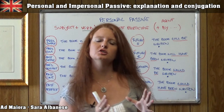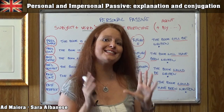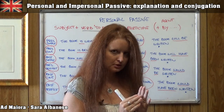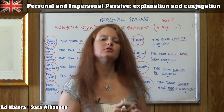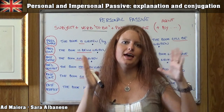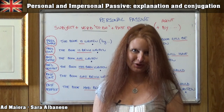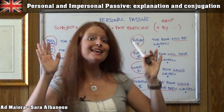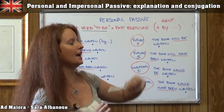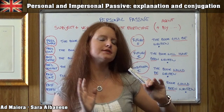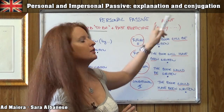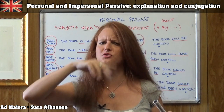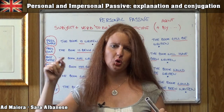We can remember that the past participle is formed by adding -ed if the verb is regular, but if it is irregular we have to check the third form — the third column on my table of irregular verbs. So: subject, verb 'to be,' past participle. If you want, you may add the agent, which is introduced by the preposition 'by.' In my example it was 'the book is written by the author.'